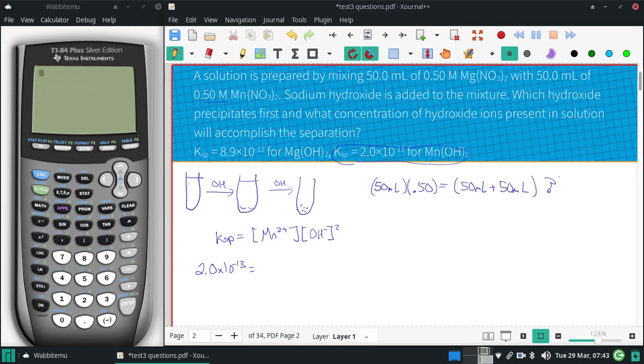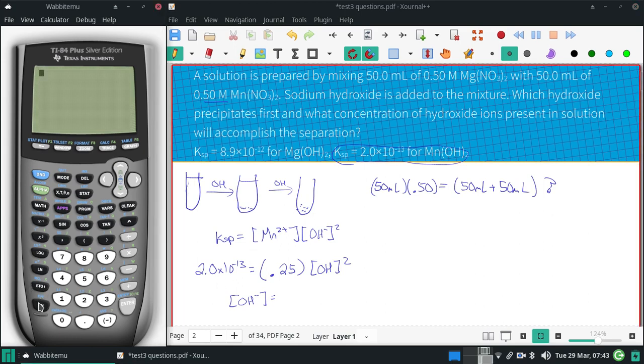And then whatever concentration is now done, because it's diluted, and that's basically cutting it in half. So our concentration in the manganese will be 0.25 molar. And then we're just going to solve for the OH concentration. So what do we get for that OH concentration?